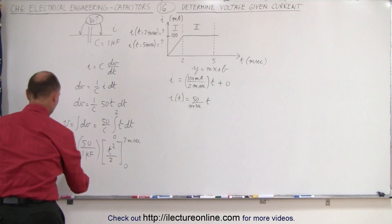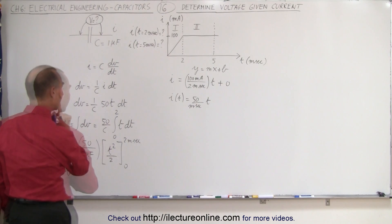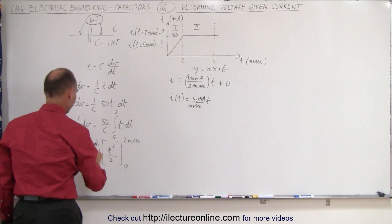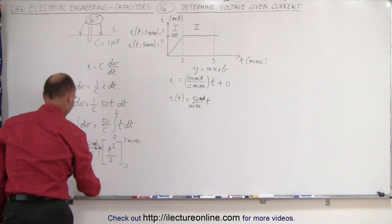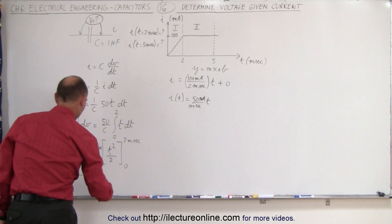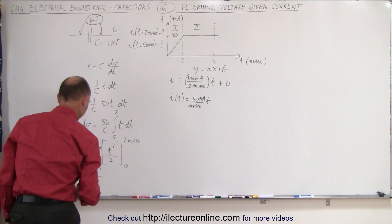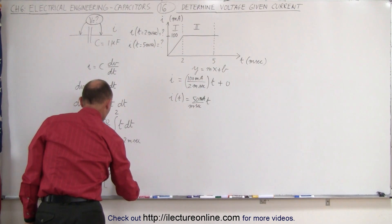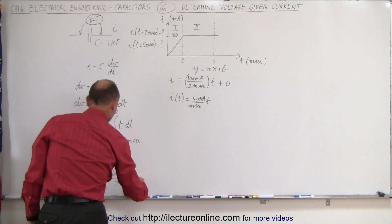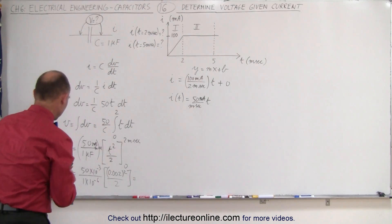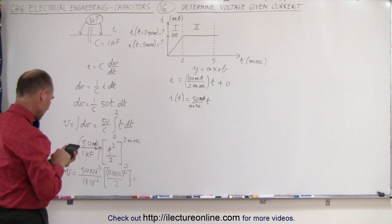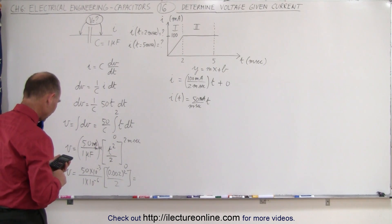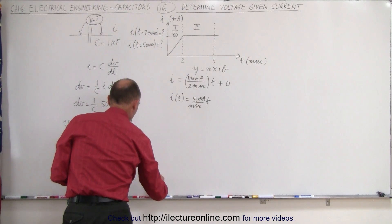When we plug in the lower limit we get 0. Plugging in the upper limit with units: 50 times 10 to the minus 3 milliamps per millisecond, divided by 1 times 10 to the minus 6 farads, times T squared over 2, where T is 0.002 seconds. Calculating that out gives us a voltage of 100 millivolts. That's how much voltage builds up on the capacitor during the first 2 milliseconds.